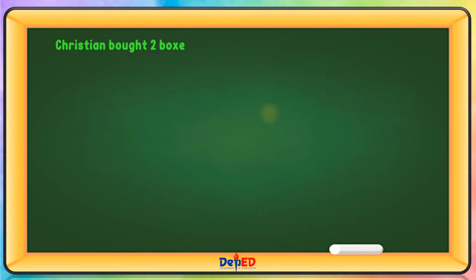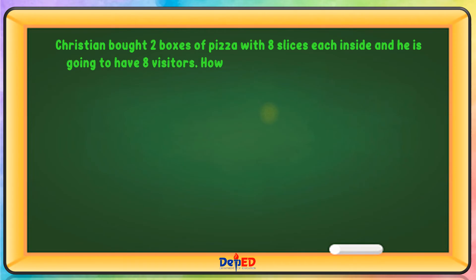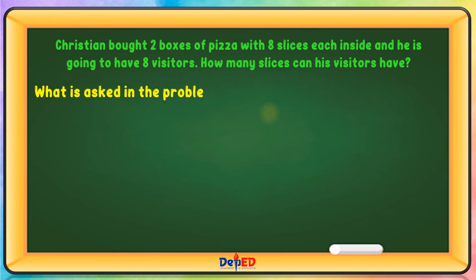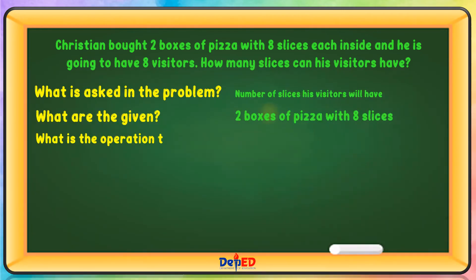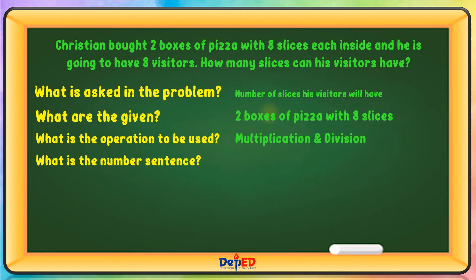Christian bought two boxes of pizza with eight slices each, and he is going to have eight visitors. How many slices can his visitors have? What is asked in the problem? Number of slices his visitors will have. What are the given? Two boxes of pizza with eight slices each. What is the operation to be used? Multiplication and division. What is the number sentence? Eight times two divided by eight equals N. Let us solve: 8 times 2 divided by 8 equals 2.